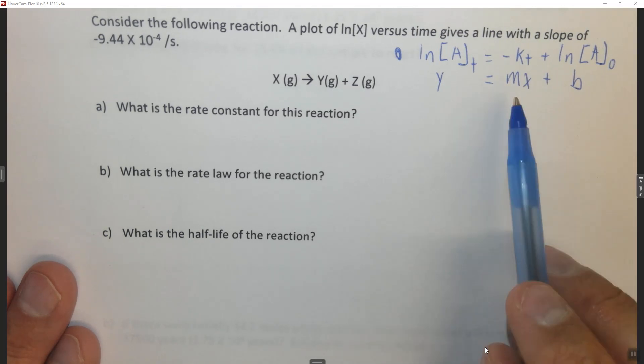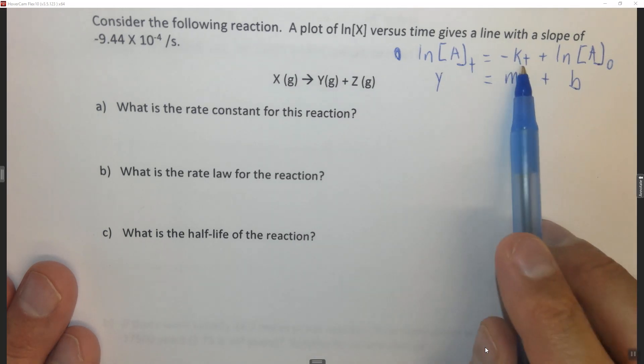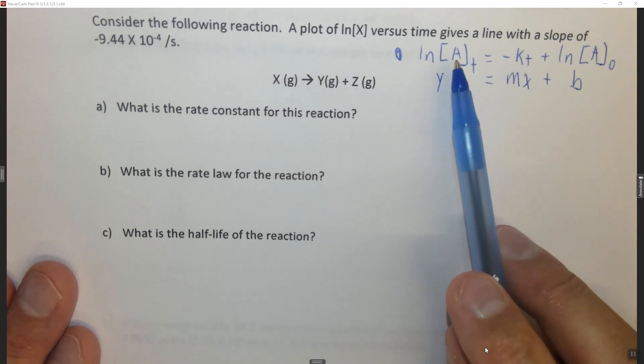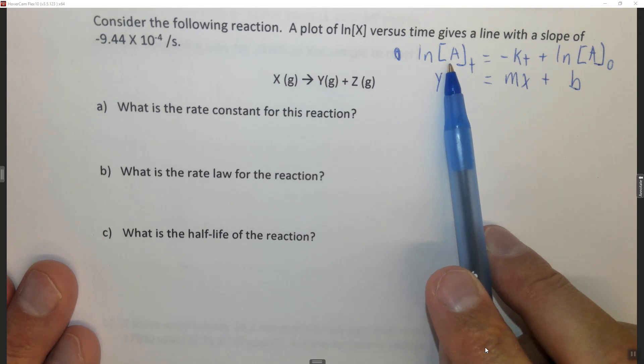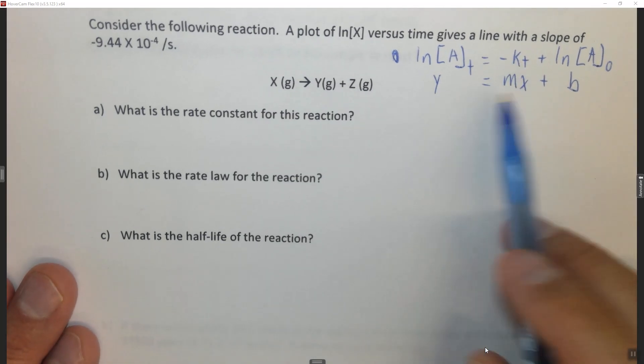Excuse me, the slope of the line is negative k. So if we graph on the x-axis time and on the y-axis the ln of the concentration of A and we get a straight line, the slope of that line is equal to negative k.